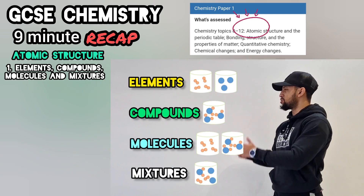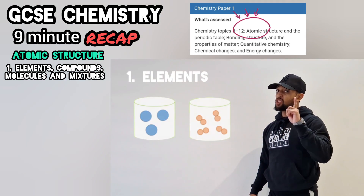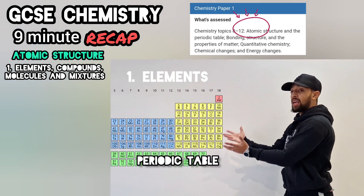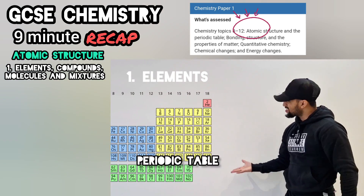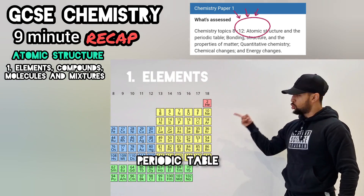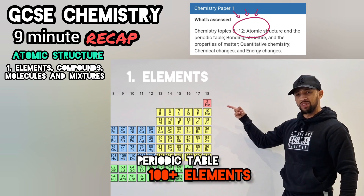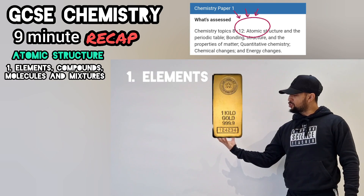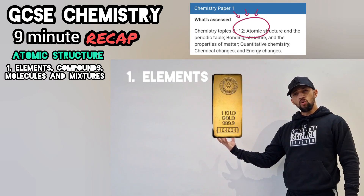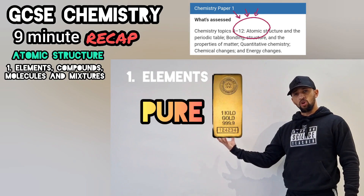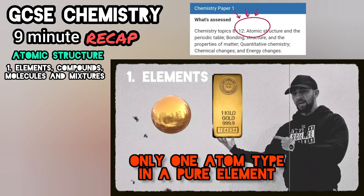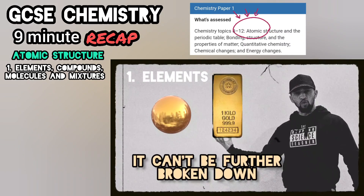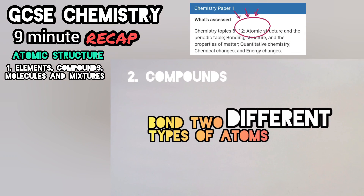Number one, let's start with elements. Let me show you this table. They're arranged here all real elegant. All 100 here with these labels. Now take gold here for example — what I hold in my hands is pure.